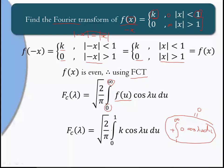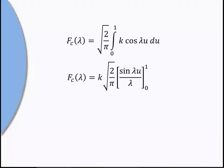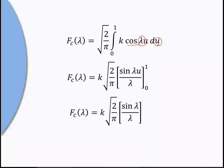Taking k outside the integral: fc(λ) = √(2/π) · k ∫_0^1 cos(λu) du. The integral of cos is sin, so this gives √(2/π) · k · [sin(λu)/λ]_0^1. Substituting limits: sin(λ)/λ − sin(0)/λ = sin(λ)/λ. Therefore fc(λ) = k√(2/π) · sin(λ)/λ. This is the Fourier transform answer.